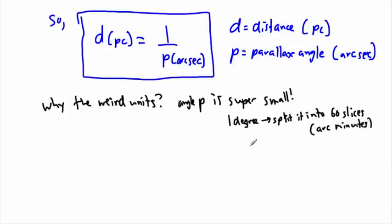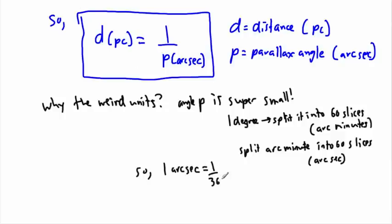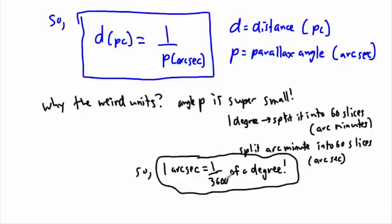But even those are too small. So you split each arc minute into 60 more even slices. That's called an arc second. So one arc second equals one three thousand six hundredths, because that's 60 times 60, of a degree. That's crazy small. So if you take one degree in a circle and split it up into 3600 even little slices, that's just one arc second.